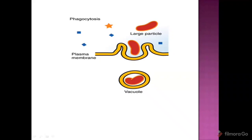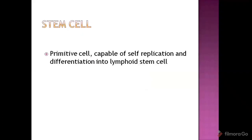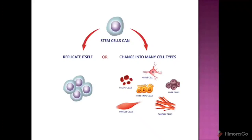Next we will discuss the stem cell. Why do we have a stem cell? It is a primitive cell — it is the first cell. It is capable of self-replication. That process is called stem cell differentiation, and it can type into lymphoid stem cells and involve in various cells.